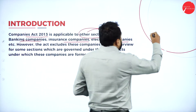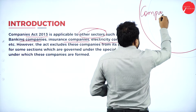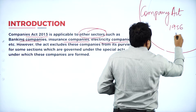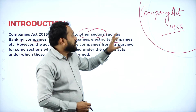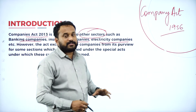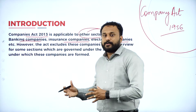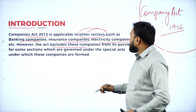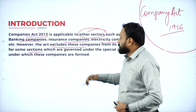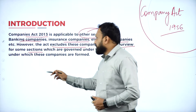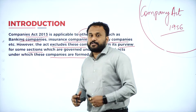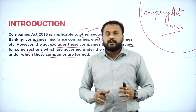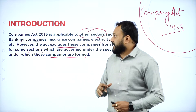We had a previous company law called the Companies Act 1956. In that act, banking, insurance, and electricity were never included together. But now the Companies Act 2013, which we call the revised Companies Act, has included these three sectors. However, the act excludes these companies from its purview for some sections which are governed under their own special acts.